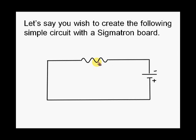Now, let's say you wish to create the following simple circuit with a Sigmatron board. This is a series circuit with a resistor and a power source. Notice the positive and negative, so we'll be working with conventional current. Current will be flowing from the positive side, going through the circuit, passing by the resistor, and onto the negative side.